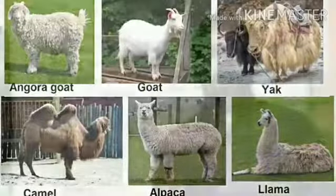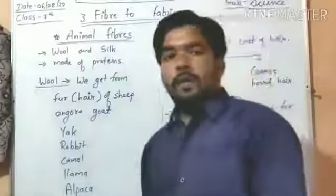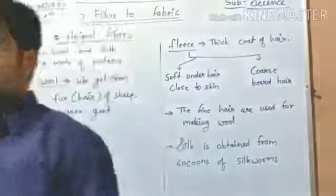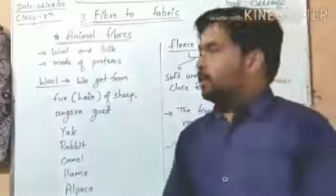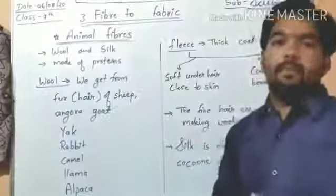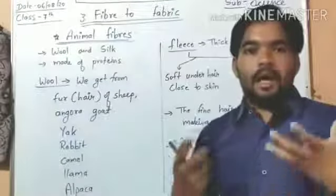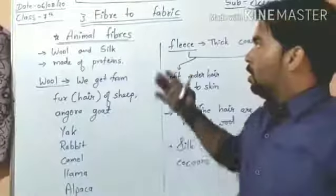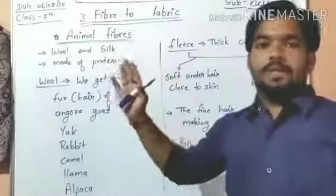After knowing about fibers, we must know what animal fibers are. Animal fibers are wool and silk — we just discussed these. Wool and silk are animal fibers and they are made up of proteins. Every animal consumes protein inside its body, and their wool or silk is made up of these proteins.